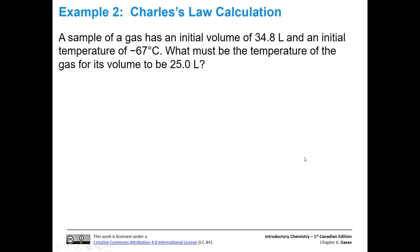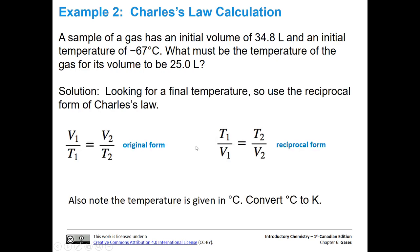Let's do another example. In this example, we have a couple of wrinkles. We have a sample of gas that has an initial volume of 34.8 liters, and an initial temperature of negative 67 degrees Celsius. We already know we have a conversion here that has to be done. What must be the temperature of the gas for its volume to be 25.0 liters? So now we're looking for T2. This brings up another little small issue. Obviously, we know that we have to convert the temperature from degrees C to Kelvin. But first, I want to talk about the reciprocal form of Charles Law.